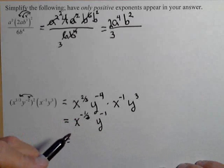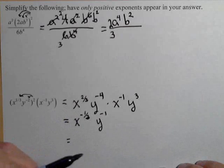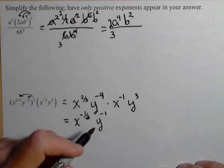Now we were asked in the problem not to have any negative exponents. To get rid of a negative exponent, you just take the reciprocal.